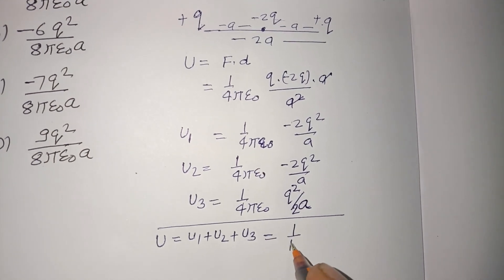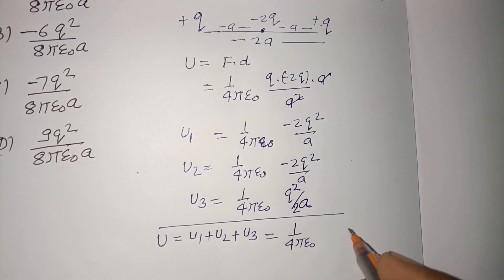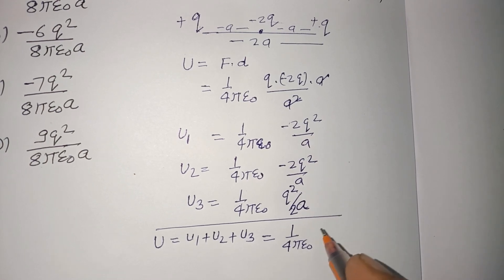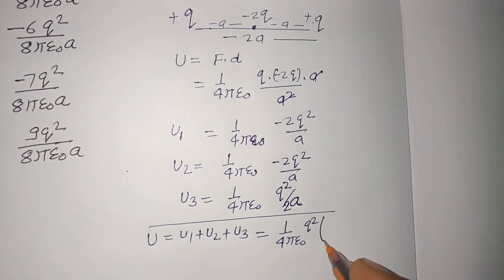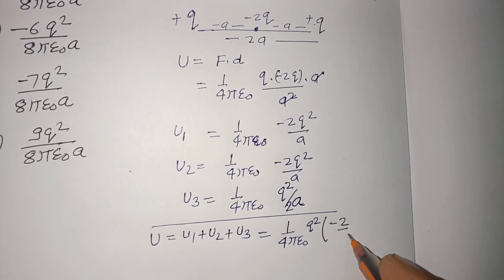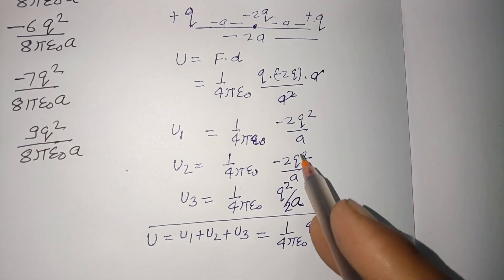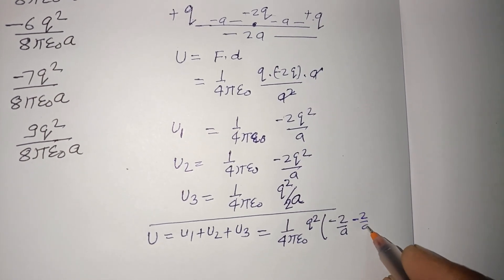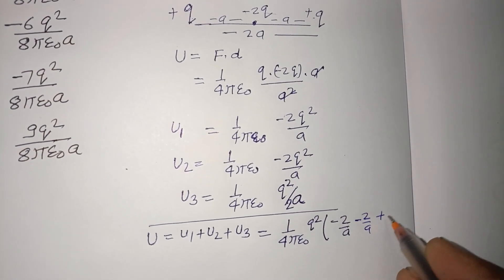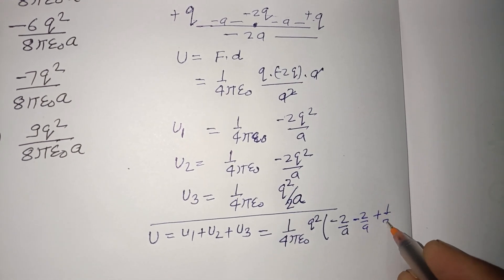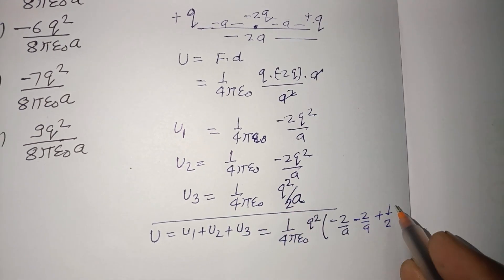Here 1 upon 4πε₀ is common, and Q² is also common. So here -2 upon A, here -2 upon A, and here 1 upon 2A.